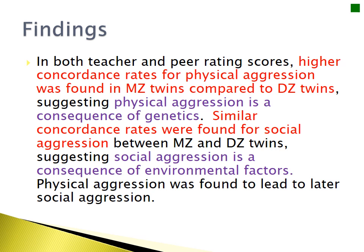In both the teacher and the peer rating scores, there was a higher concordance rate for physical aggression found between the MZ twins compared to the DZ twins. You need to be able to quote and talk about the concordance rates in your results. This suggests that physical aggression is therefore a consequence of genetics.